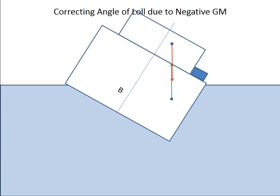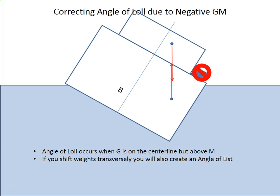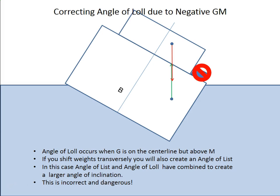This is an unsafe way of trying to correct for loll. Don't do this. Angle of loll occurs when G is on the center line but above M. And if you shift weights transversely, you're also going to create an angle of list. Those two are going to work together. And the vessel is going to incline even further and perhaps even capsize. So this is incorrect and dangerous.